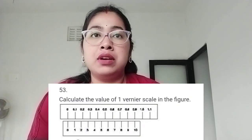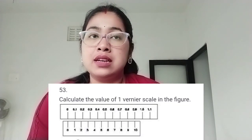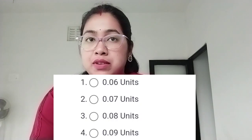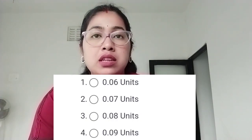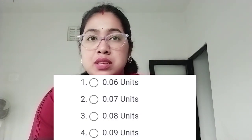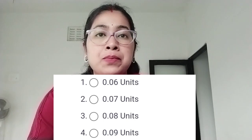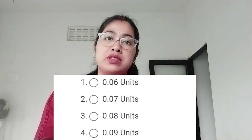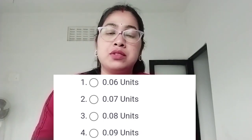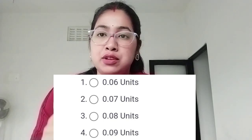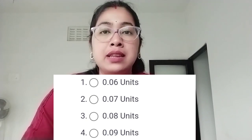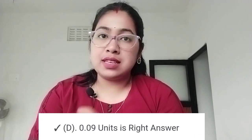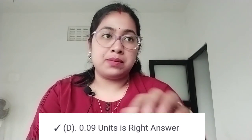Next question: calculate the value of 1 vernier scale division in the figure. Option 1: 0.06 unit. Option 2: 0.07 unit. Option 3: 0.01 unit. Option 4: 0.09 unit. The correct answer is option D, 0.09 unit.